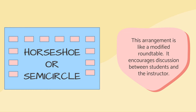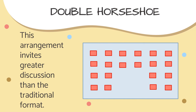The horseshoe or semicircle arrangement is like a modified round table. It encourages discussion between students and the instructor. The horseshoe offers a modified round table setup where all participants face each other while the instructor can move about the room. A horseshoe setup can be particularly effective when the instructor wishes to project and discuss course-related material in the front of the class. The double horseshoe invites greater discussion than a traditional format, though it is more limited by students in the inner circle facing away from the outer circle. However, students may more easily interact with those nearest to them or turn around for group work.